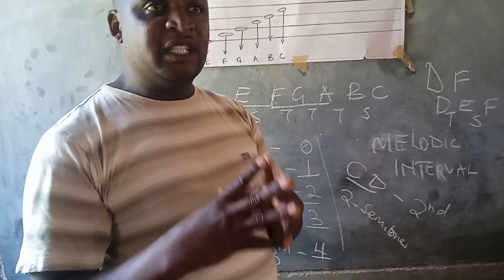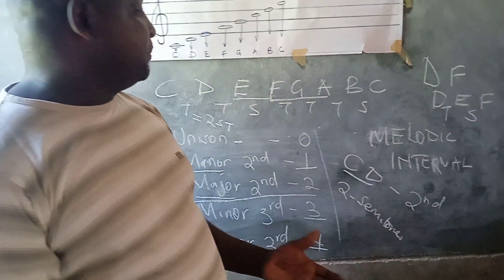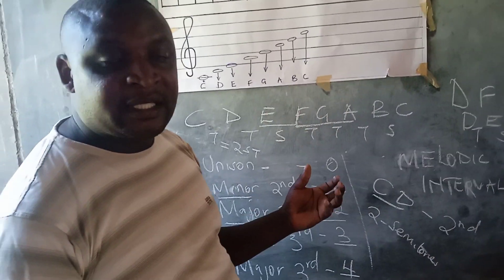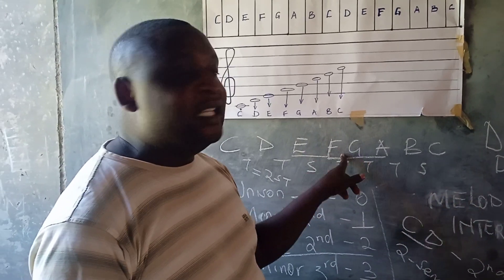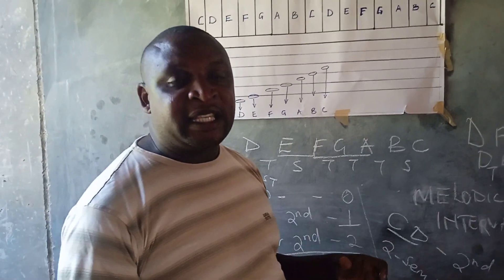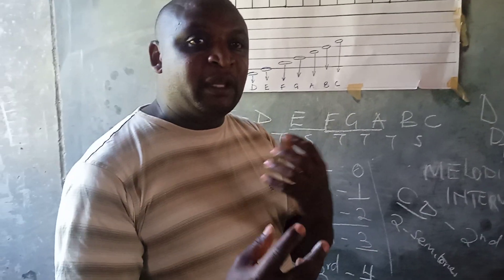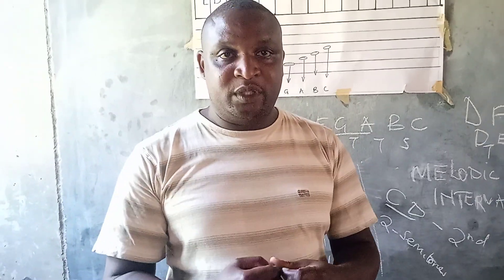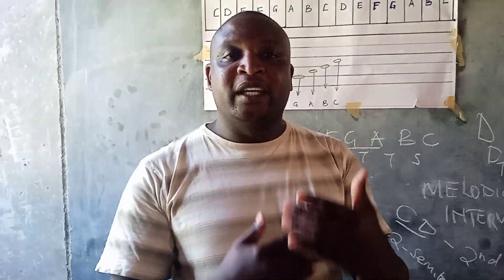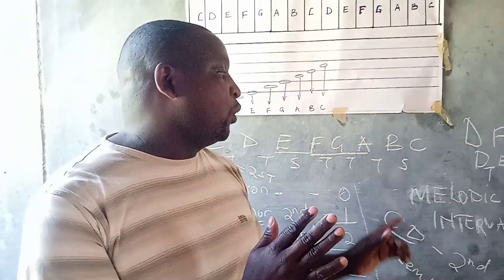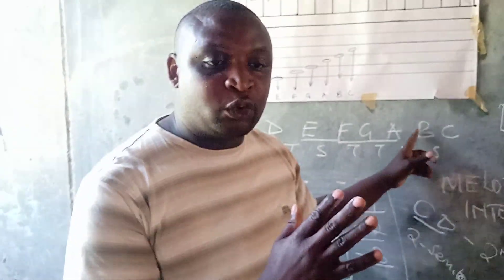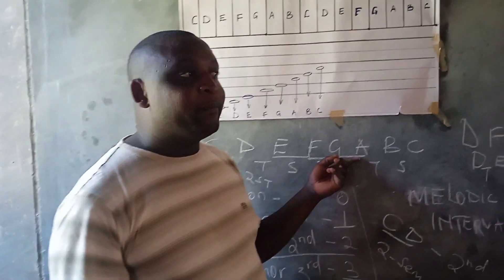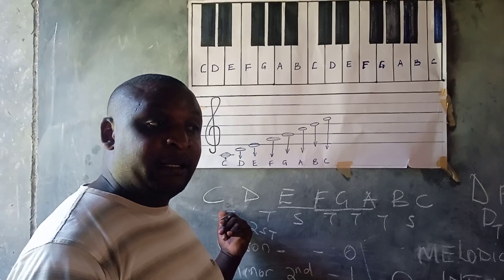It is important that before you teach learners intervals, you first teach them the scale — the C major diatonic scale — and how to generate diatonic major scales, so they know that after C comes G major, then D major, and so on. This will help them understand that between the third and fourth, and seventh and eighth of a diatonic major scale, there are semitones. Then they can comfortably calculate any interval. It is easiest to teach interval using C major because it has no accidentals.